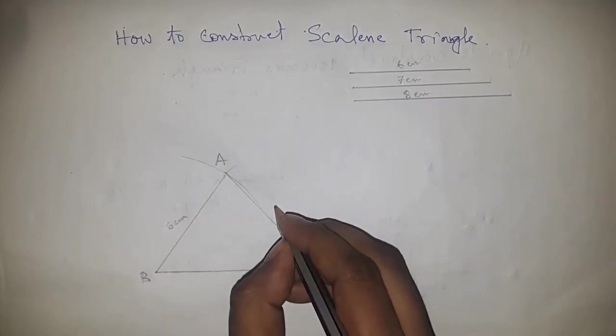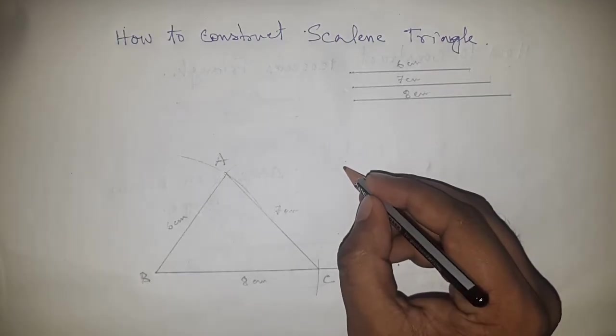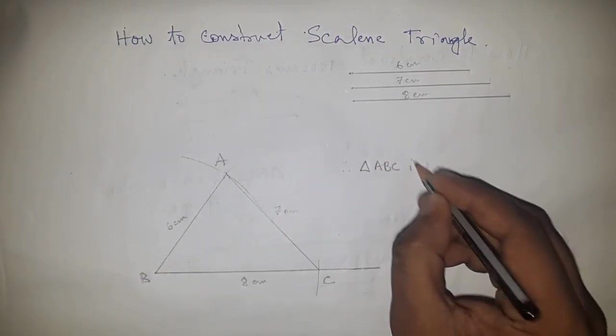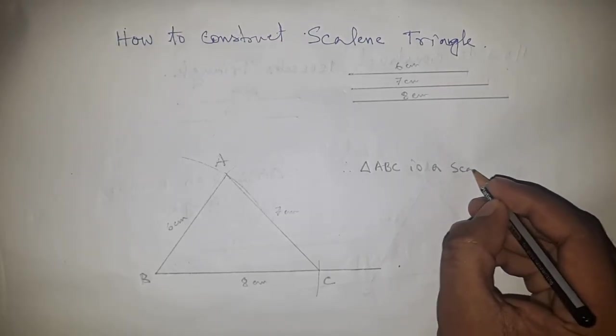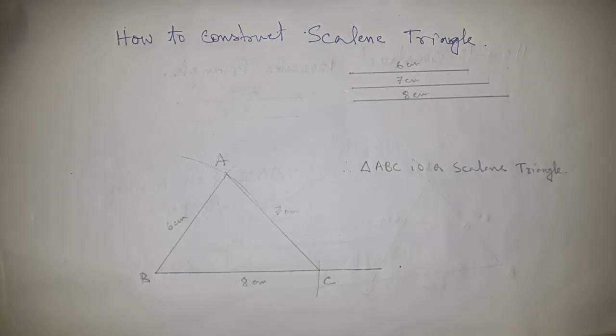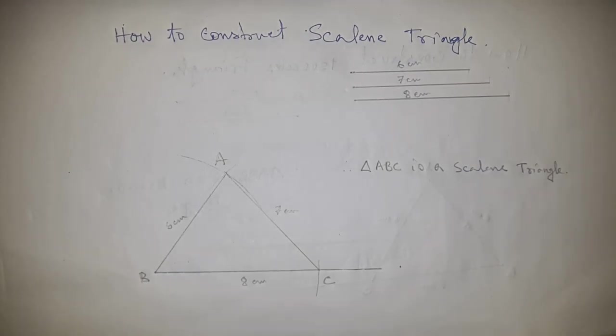Therefore, ABC is a scalene triangle. Thanks for watching, please subscribe.